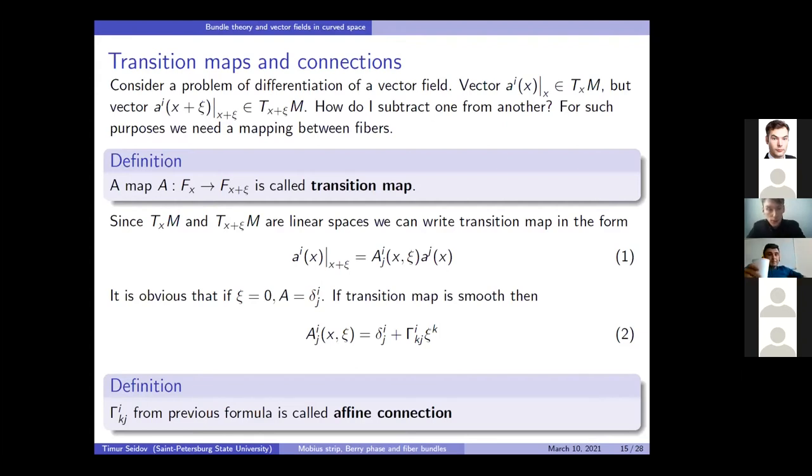So, since both of our tangent spaces that our vector fields belong to in different points are linear spaces, we can write a transition map as a linear transform. So, if it is obvious that if we are not moving anywhere, then the map is identical and equal to Kronecker delta. And since we want mapping to be smooth and continuous, that is expandable in Taylor series in terms of shift. We can represent the infinitely close transition like this. So, the coefficient at the first degree of the shift, in fact, is a generator of a shift, and it is called the affine connection.